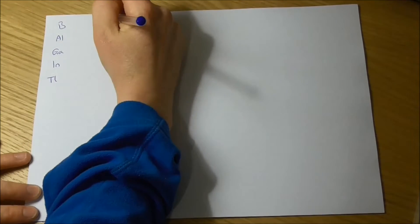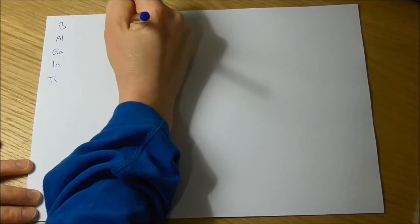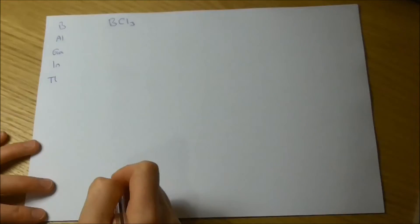This video is about electron deficiency and in particular the group 13 halides. So here's group 13. We'll start with boron and we'll consider boron trichloride as an example.